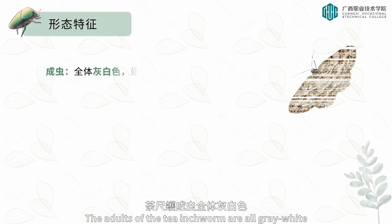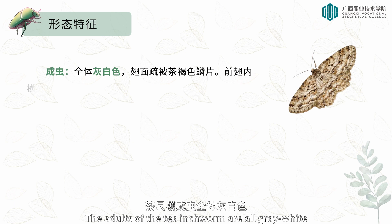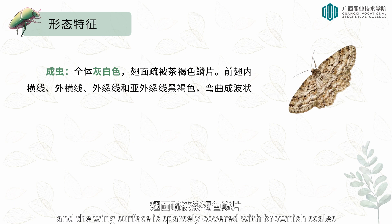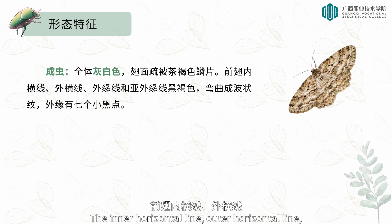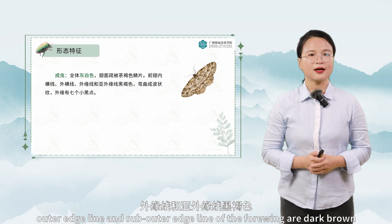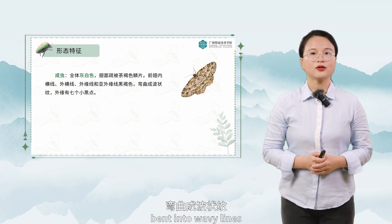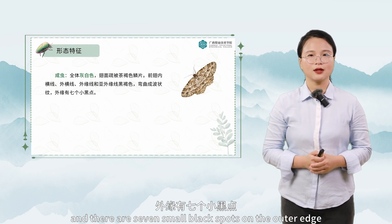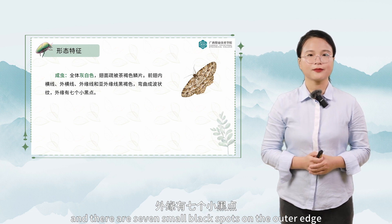The adults of the tea inchworm are all gray-white, and the wing surface is sparsely covered with brownish scales. The inner horizontal line, outer horizontal line, outer edge line, and sub-outer edge line of the forewing are dark brown, bent into wavy lines, and there are seven small black spots on the outer edge.